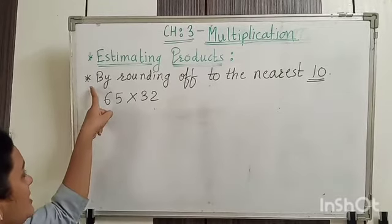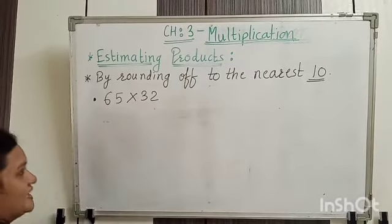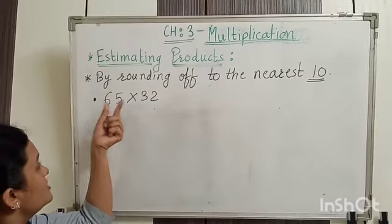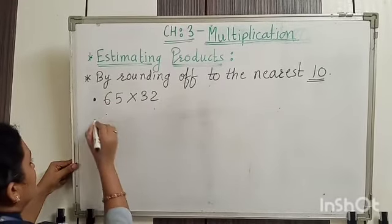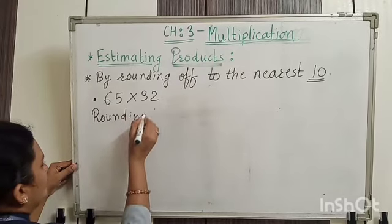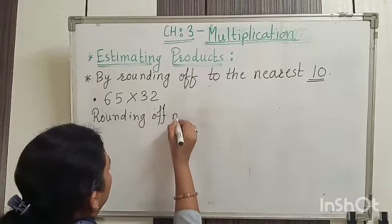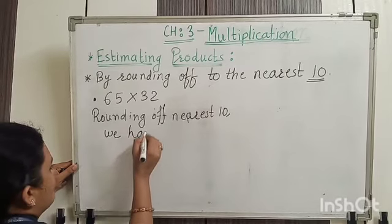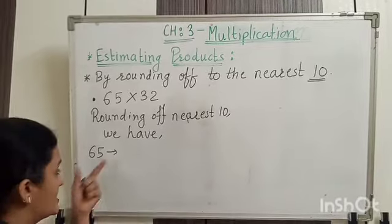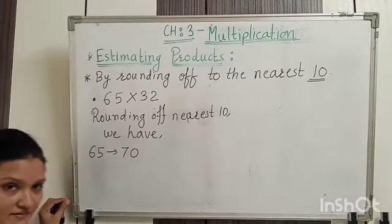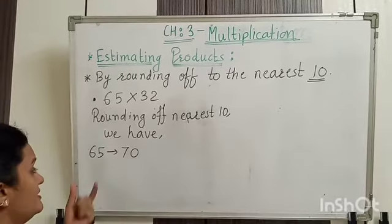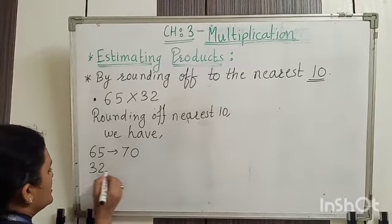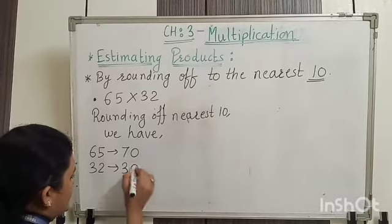First, see by rounding off to the nearest tens. Let's take an example of 65 multiply by 32. First, we will find the nearest ten of these numbers. So rounding off to the nearest ten — what is the nearest ten of 65? Yes, it is 70.